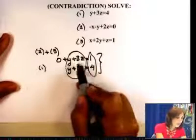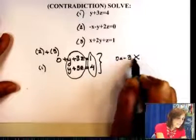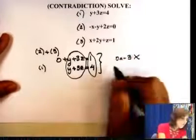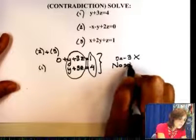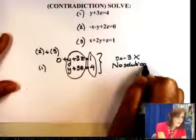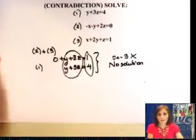So the left, if I subtract this, you're going to end up with 0 equals negative 3. That is not possible. That's a contradiction. The answer to this is no solution. So when you end up with a situation where the left of the equation and the right of the equation do not match, your answer is no solution.